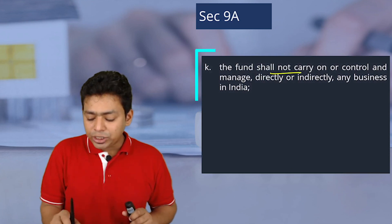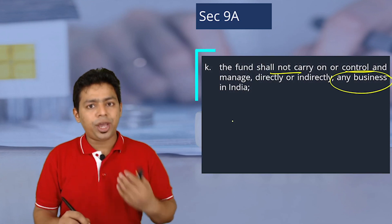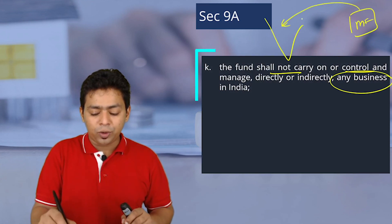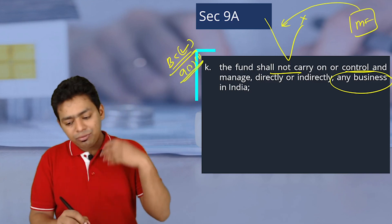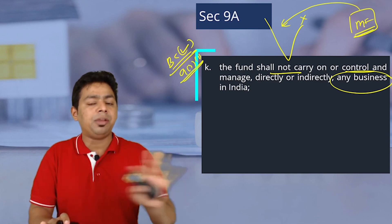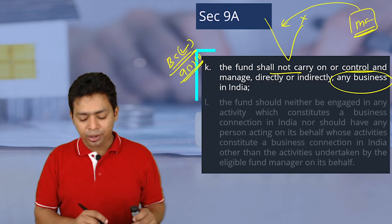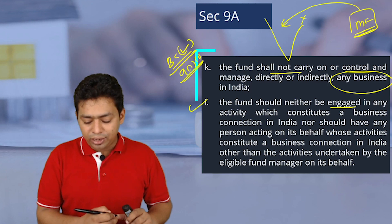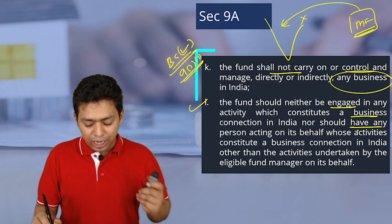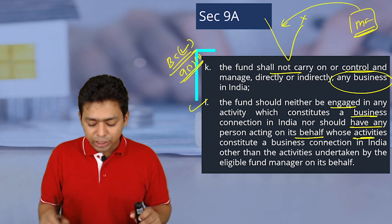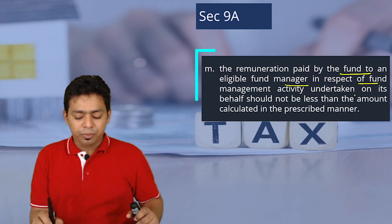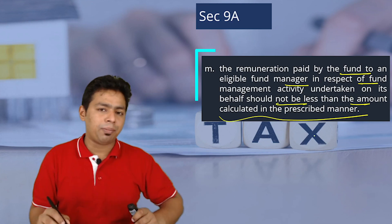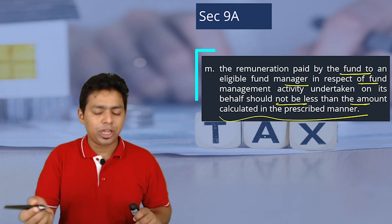The fund shall not carry, control, or manage directly or indirectly any business in India. Because we are considering it as a genuine mutual fund, it should not be doing any business in India — otherwise a business connection would be established and Section 9.1.1 taxability would attract. A fund should neither be engaged in any activity constituting a business connection in India, nor have any person acting on its behalf whose activities constitute a business connection, other than the activities undertaken by the eligible fund manager.